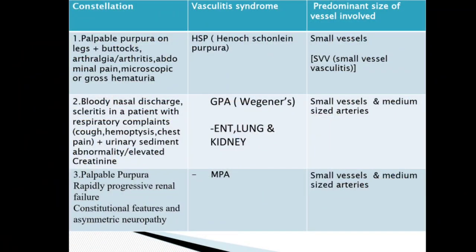Now I will briefly discuss some of the constellations in particular vasculitis syndromes and the predominant size of vessels involved. The first is palpable purpura on legs and buttocks, arthralgia, arthritis, abdominal pain, microscopic or gross hematuria — and more so if it is below 15 years of age. Obviously Henoch-Schönlein Purpura (HSP) would be the first diagnosis. It is a small vessel vasculitis.